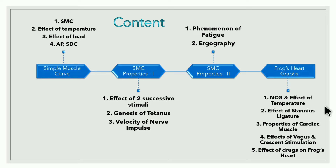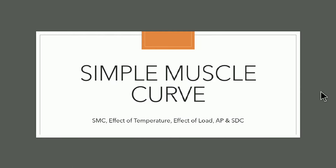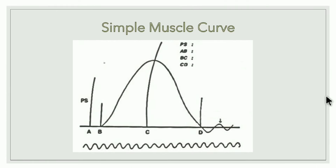Simple muscle curve is a mechanical recording of skeletal muscular contraction. When we electrically stimulate the skeletal muscle of a frog, this kind of graph is obtained. This is known as simple muscle curve. The simple muscle curve has four phases: the first phase is the latent period, second is contraction period, third is relaxation period, and from D onwards it is known as physiological curves.